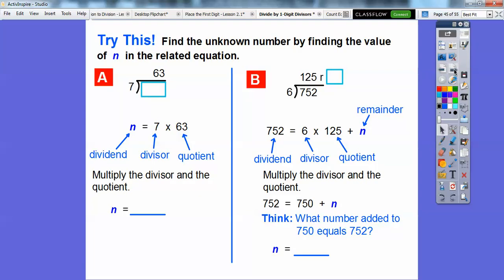Let's try this. Find the unknown numbers by finding the values of n in the related equations. So we're going to do multiplication, undo each of these problems. This one says 7 goes into some number 63 times. So what we're going to do is find this number by multiplying this quotient by this divisor, and it's going to give us this dividend. That's our unknown, that's our n. So the n is in this box. We're looking for the remainder on n over here. So we're going to multiply this quotient times this divisor, and then whatever that is, we'll see how much more do we have to add to get to this dividend.